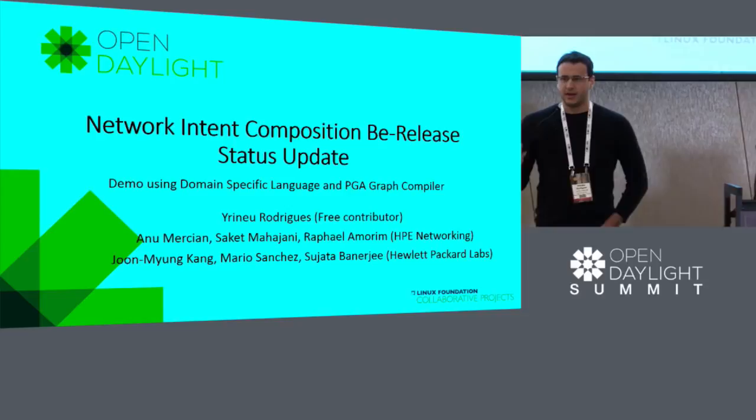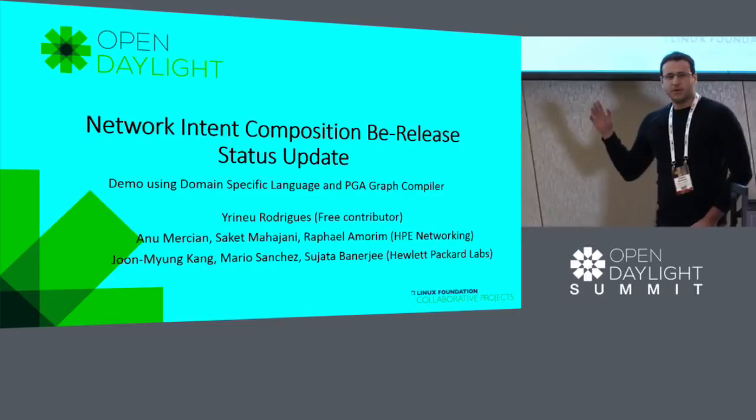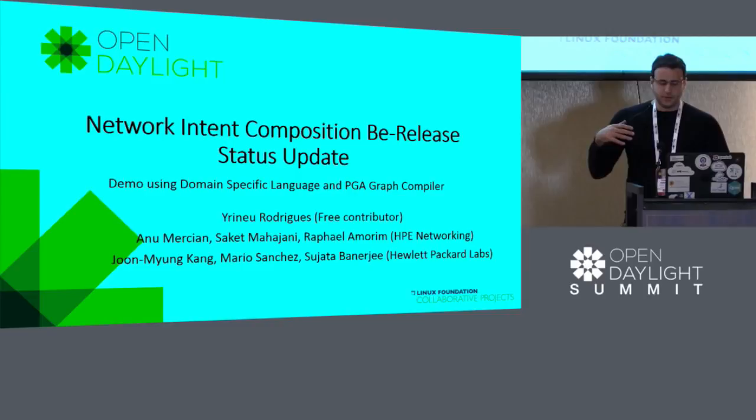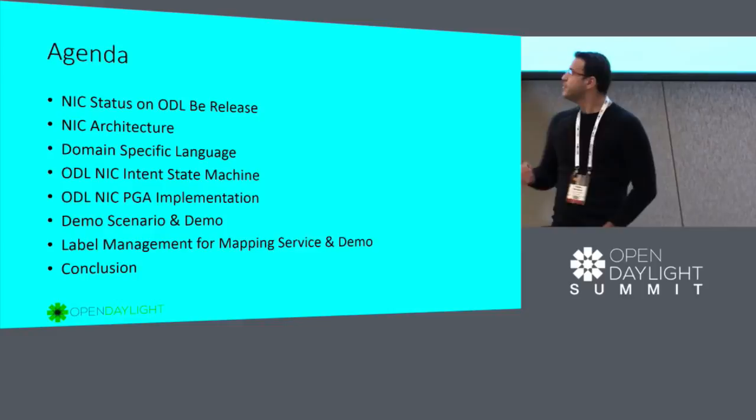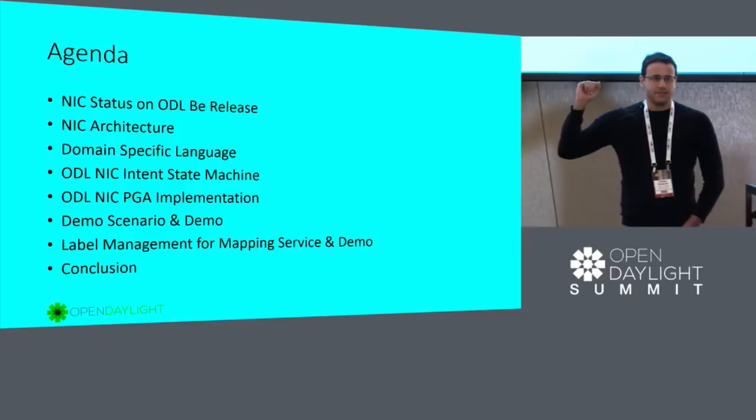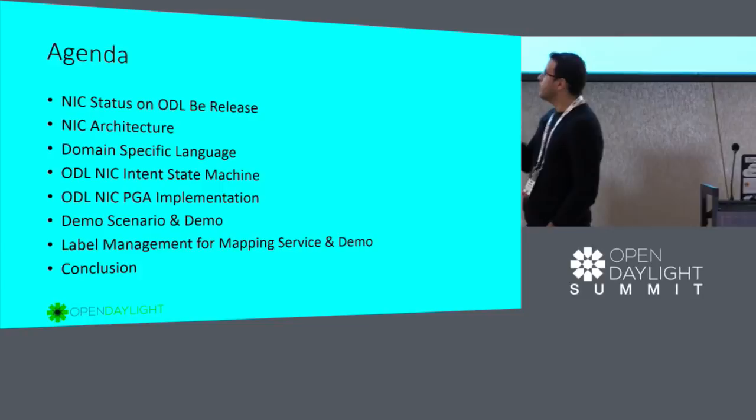We will talk a little bit about some features and the status of the NIC project. We want to talk about the current architecture of the NIC project and how we are doing a PTA implementation and intent state machine. Today we have two demos: one for PTA implementation and another one for label management for mapping sets.